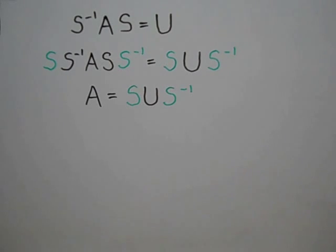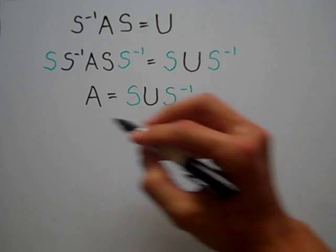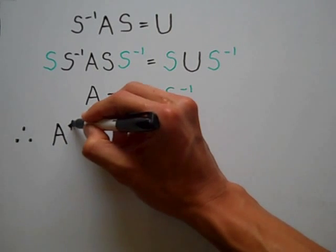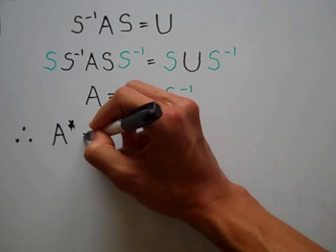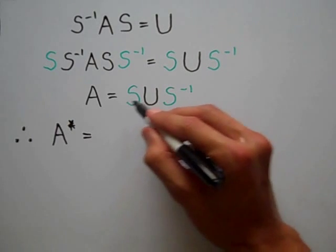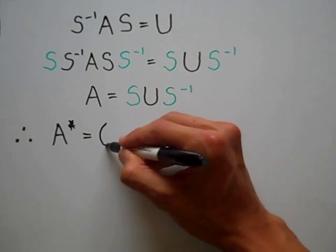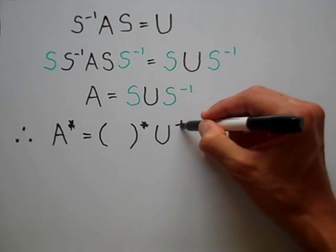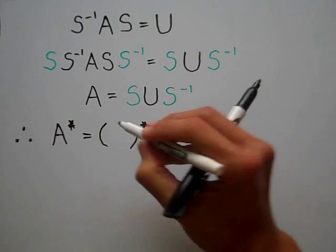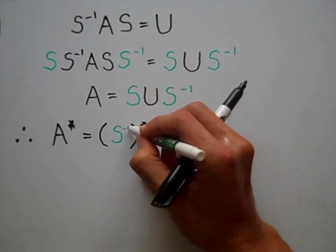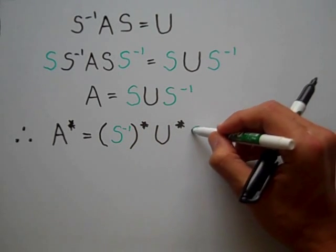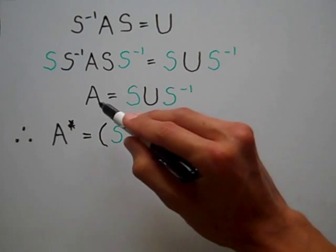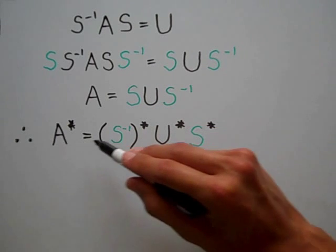Now I'm going to take the conjugate transpose of both sides of this equation. So A star, the conjugate transpose of A. When I take the conjugate transpose of the right-hand side, the order will reverse. So what I'll have is S inverse star times U star times S star. Taking the conjugate transpose of both sides, I wind up with that.